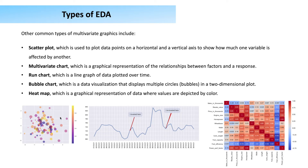A heat map is a very good example of complex multivariate analysis. You can plot, say, ten features in a heat map and find the degree of correlation between each combination. The color-coded numbers are correlation coefficients representing the degree of correlation between each pair of features. The tools of EDA include univariate and bivariate/multivariate visualizations, predictive models such as linear regression, and statistical methods including inferential and descriptive statistics.